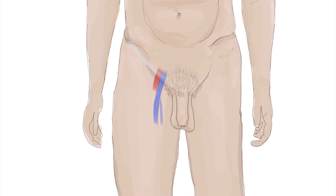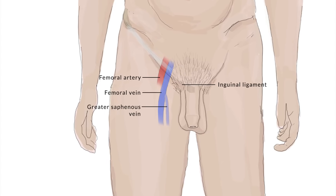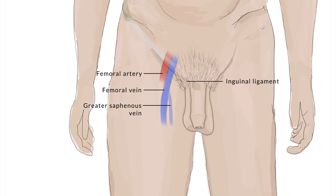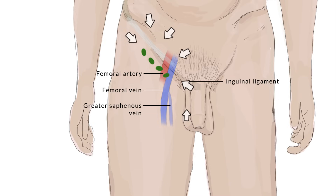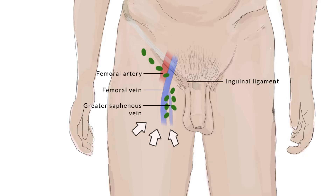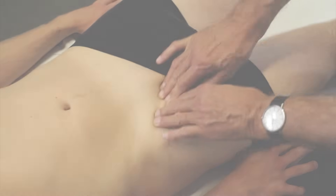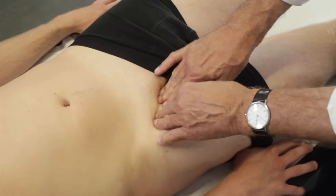Afterwards, the superficial lymph nodes of the inguinal area should be palpated. They are divided into a horizontal and a vertical group. The horizontal group lies below the inguinal ligament and can therefore be palpated parallel to its course. This group is responsible for draining parts of the external genitalia, trunk, and lower back. The vertical group is located adjacent to the great proximal saphenous vein and drains lymphatic fluid from the lower extremity. Examination of the inguinal lymph nodes is best performed with the patient lying down.